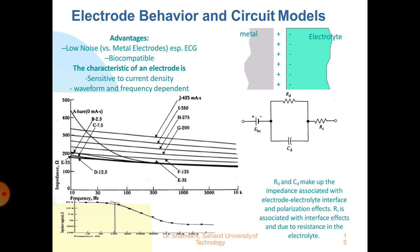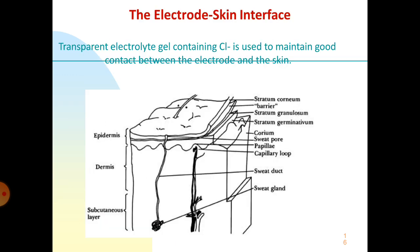The metal has positive ions and the electrolyte has negative ions. When electrical current is applied, the positive and negative ions — electrons and holes — make a movement and produce the current, which passes through the electrode. This is the equivalent circuit of the electrode. This diagram shows the skin interface, where a transparent electrolyte gel containing Cl⁻ is used to maintain good contact between the electrode and the skin.